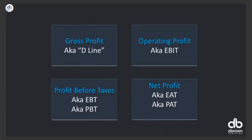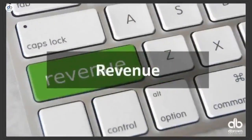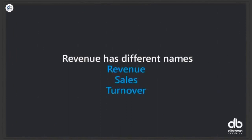Shareholders receive dividends from net profit, and what remains is called retained earnings — that's what you retain in the business. Shareholders have the right to take everything, but that's not really good. This is the typical structure of your P&L. Revenue also has different names: accountants call it revenue, sales, or turnover — they all mean the same thing. Accountants have different names for many things.